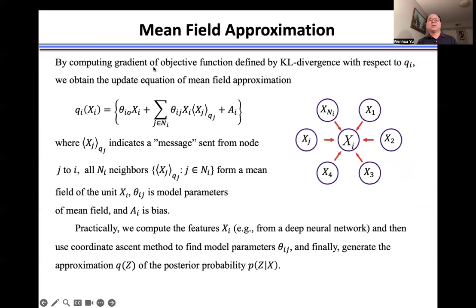By computing gradient of objective function defined by KL-divergence with respect to q_i, we obtain the update equation of mean field approximation here. Where ⟨X_j⟩_j, q(z_j) indicates a message sent from node z_j to i, or N_i neighbors form a mean field of unit X_i.